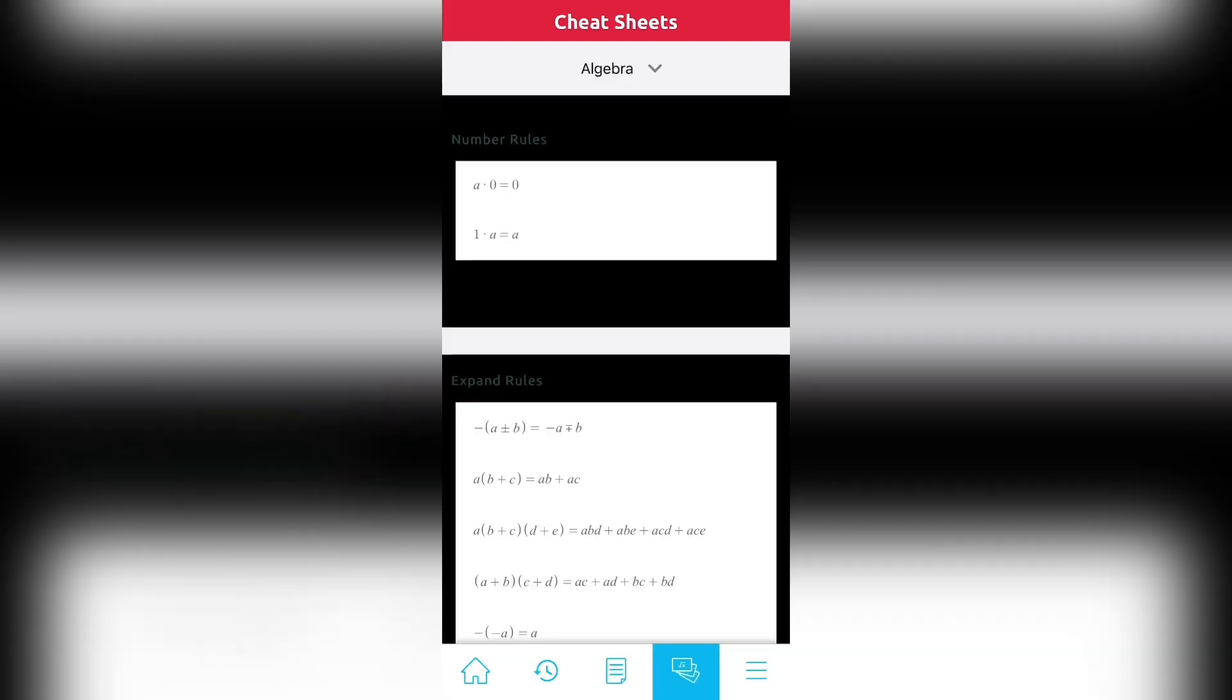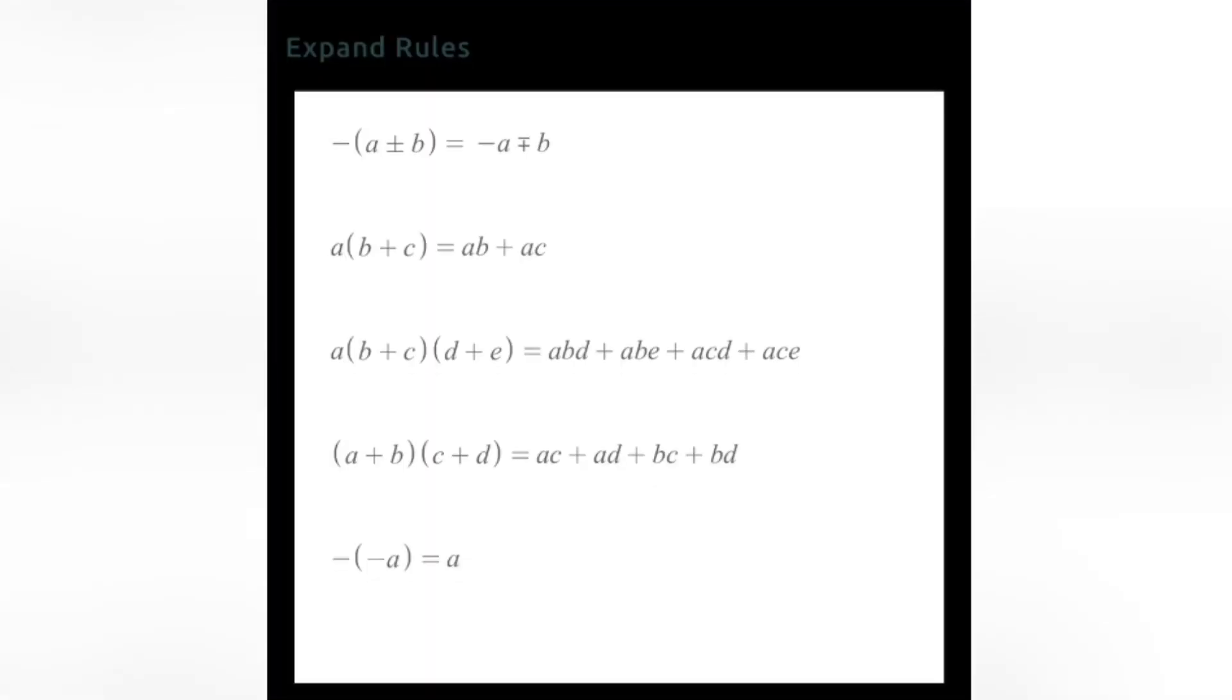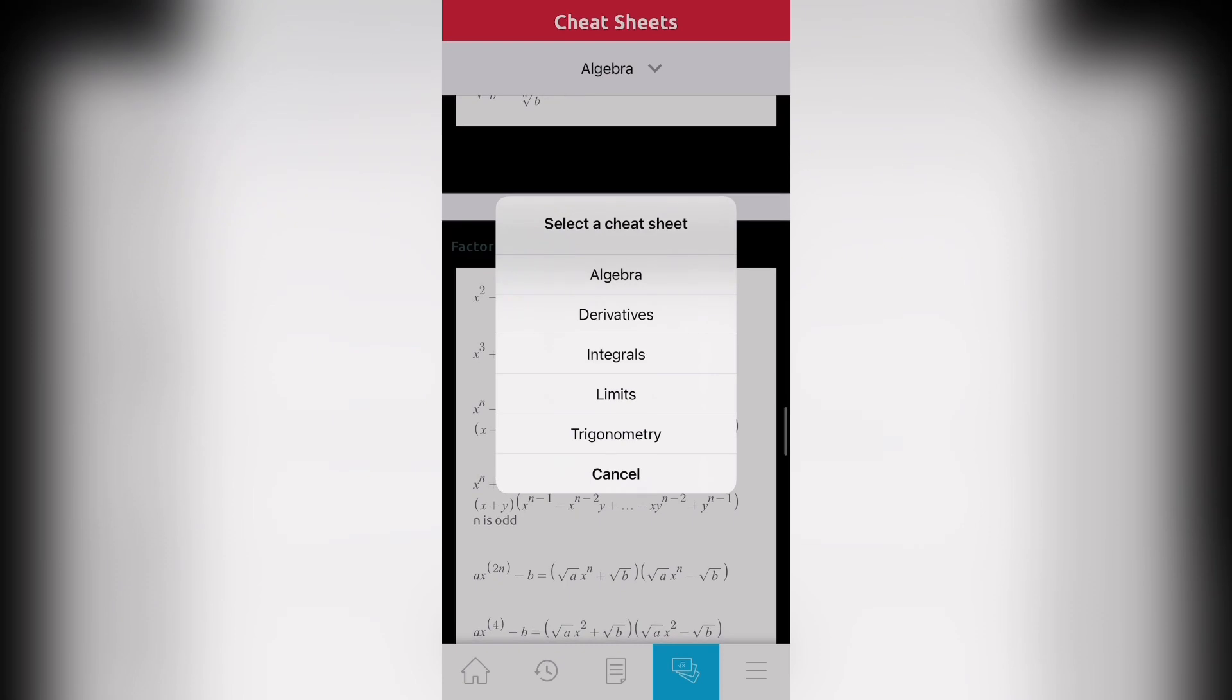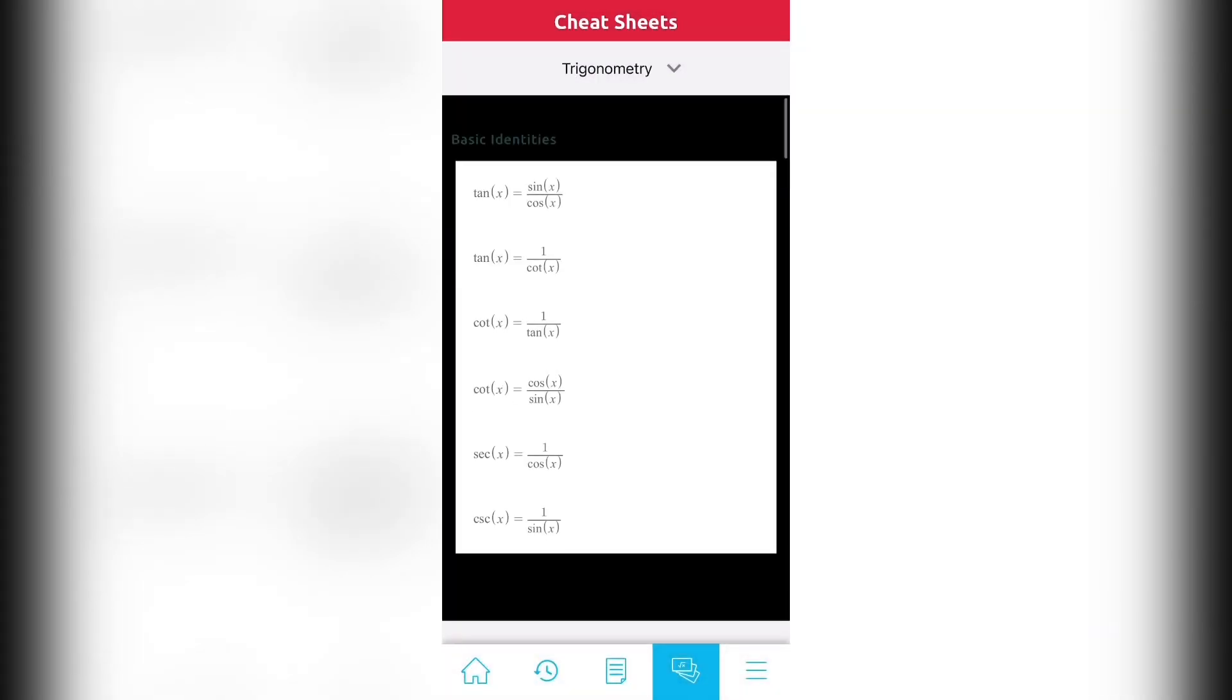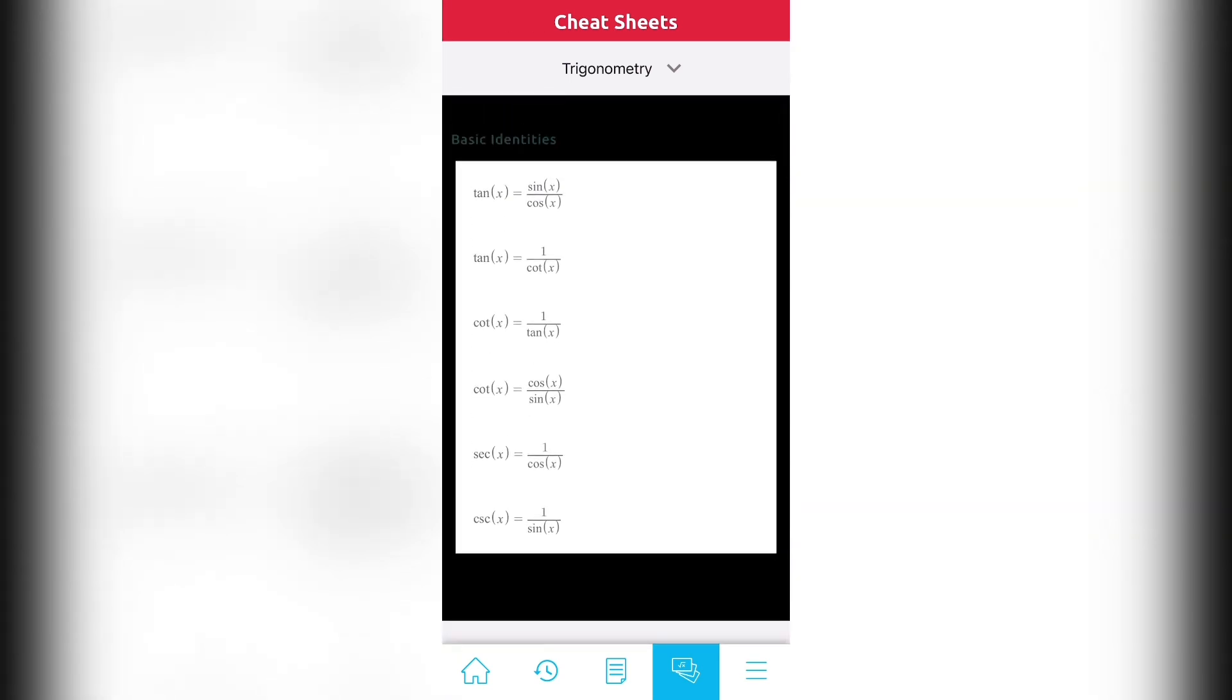If you head over here, there are actually cheat sheets in order to find different rules depending on whatever topic. As an example, these are the expand rules in the algebra topic. If I click on something like trigonometry, then it can show me basic identities and so forth over here. So it really has all the information that you need in order to be successful in math right in this app.